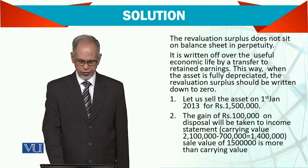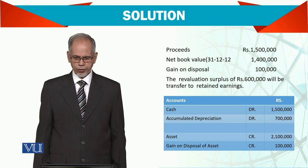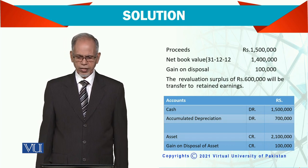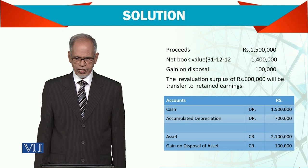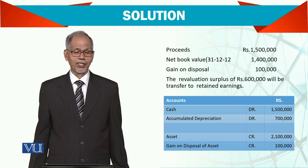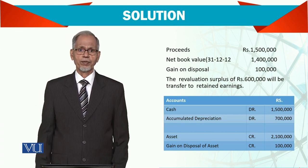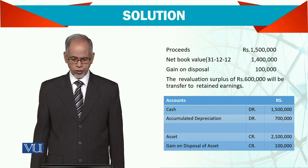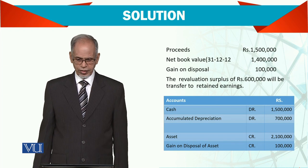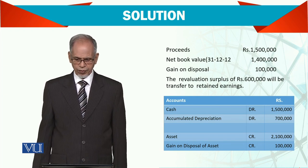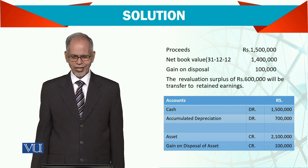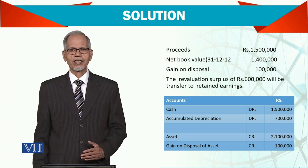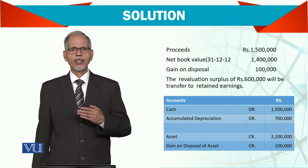The carrying value is 1,400,000 and the sales proceeds are 1,500,000, so there is a profit of 100,000. The proceeds journal entry is: debit cash 1,500,000, debit accumulated depreciation, credit the asset account, and credit gain on disposal. Additionally, the revaluation surplus of 600,000 remaining is transferred to retained earnings, because you have sold the asset. Any balance in revaluation surplus after an asset is sold must be returned to retained earnings.